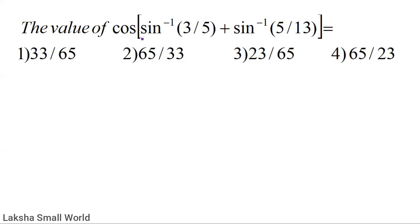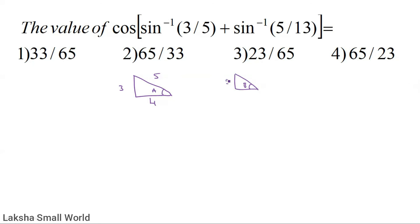Find the value of cos(sin⁻¹(3/5) + sin⁻¹(5/13)). Draw two triangles A and B. For triangle A: sin A = 3/5, so sides are 3, 4, 5. For triangle B: sin B = 5/13, so sides are 5, 12, 13.